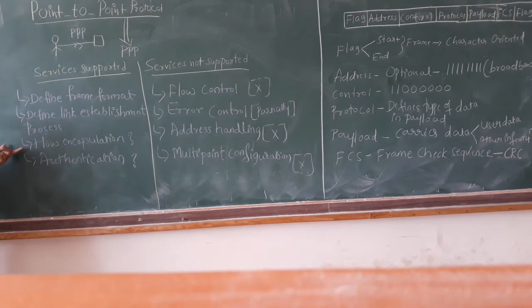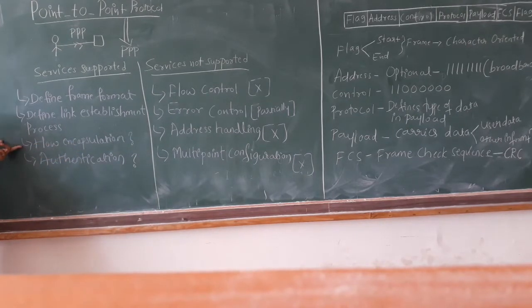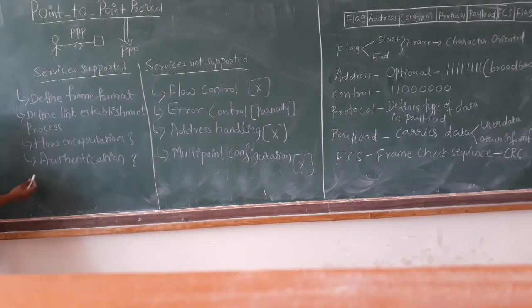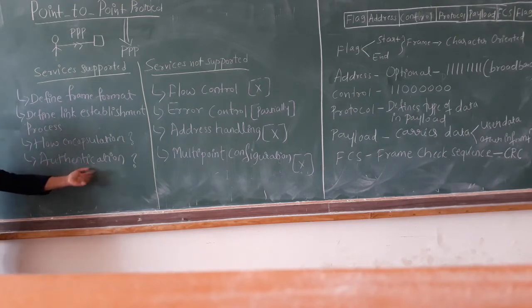It defines the way of encapsulation. The encapsulation is done at the data link layer, so it defines how the data from the network layer is encapsulated to form the frame. That encapsulation procedure is defined and supported by point-to-point protocol. The last service is authentication — it defines how the password is shared between the two communicating nodes.